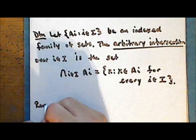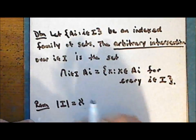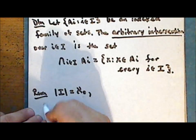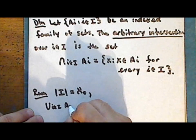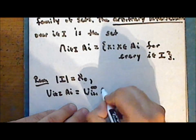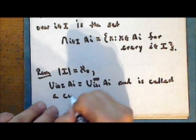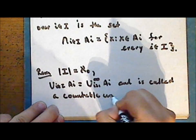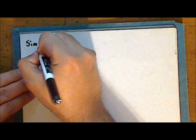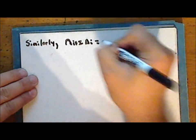Notice that if the indexing set is countable — in this case countably infinite — then the arbitrary union is notated as the union from i equals 1 to infinity of A sub i, and is called a countable union. Similarly, the arbitrary intersection is denoted analogously and called a countable intersection.